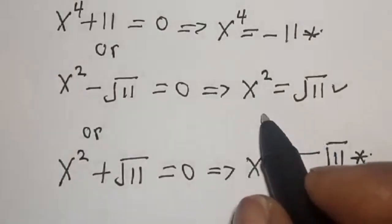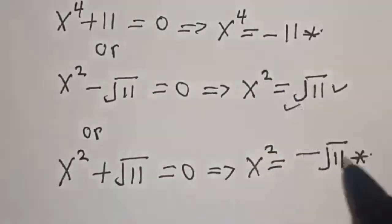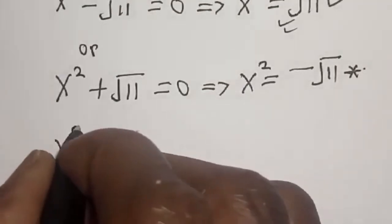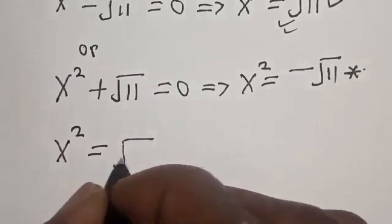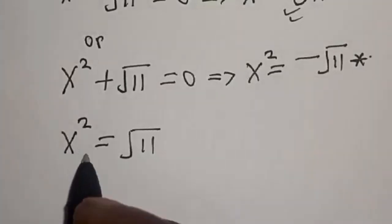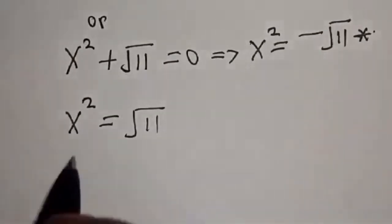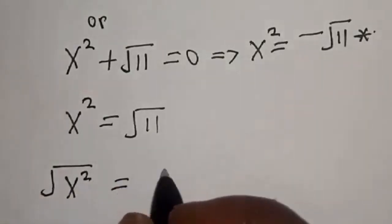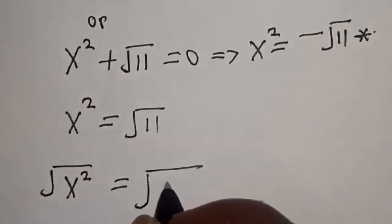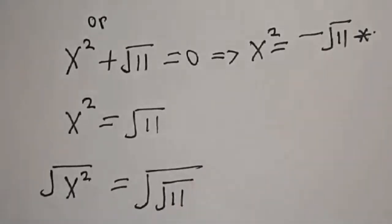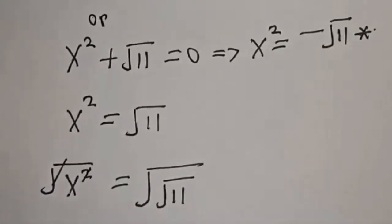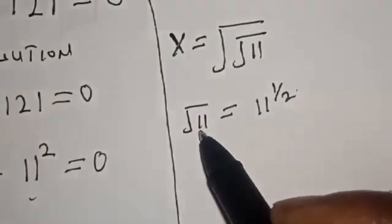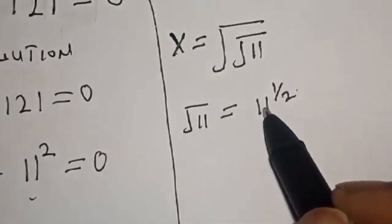The only true solution we have now is s squared is equal to square root of 11. We are looking for the value of s, so let's take the square root of both sides. That is, square root of s squared equals square root of square root of 11. So s equals square root of square root of 11. Note that square root of 11 is equal to 11 raised to power 1 over 2.